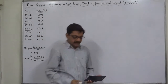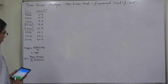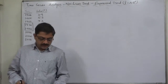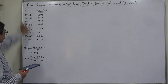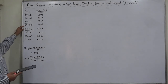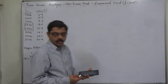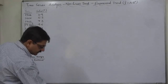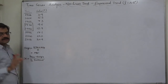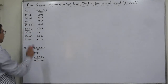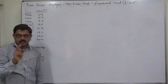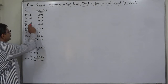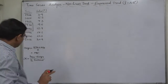Welcome and namaskar. This is time series analysis — nonlinear trend, specifically exponential trend, second example. In this case we are going to discuss a time series having an even number of years. In case of even number of years, there can never be a single middle year, so we take the mean of the two middle years as origin, which is 1981, coming between 1976 and 1986.